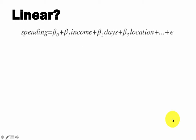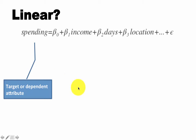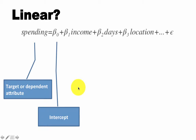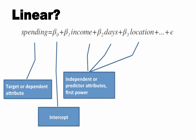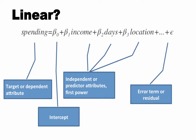Why is it called linear regression? It's called linear regression because the target attribute spending is expressed as an intercept plus a function of three independent or predictor attributes. There will be a small error term or residual, which is the difference between the actual spending and the predicted spending. It's called linear because none of the attributes — income, days, or location — is raised to any power other than 1. Each of them is raised to the power of 1, therefore we call it linear regression.